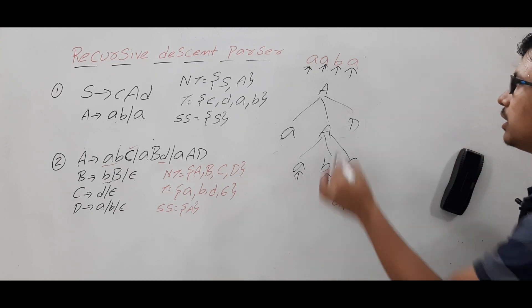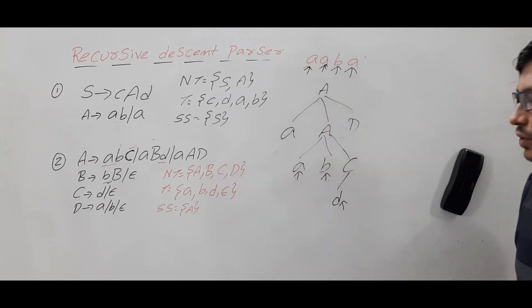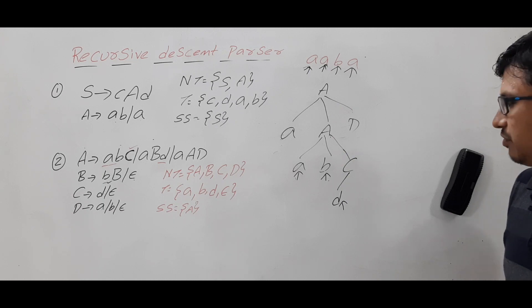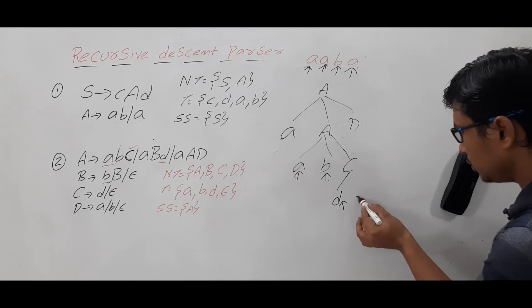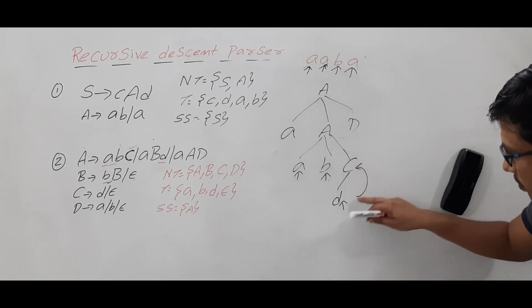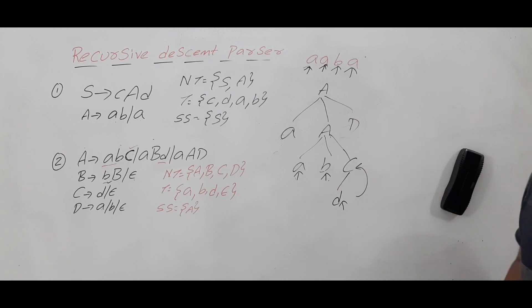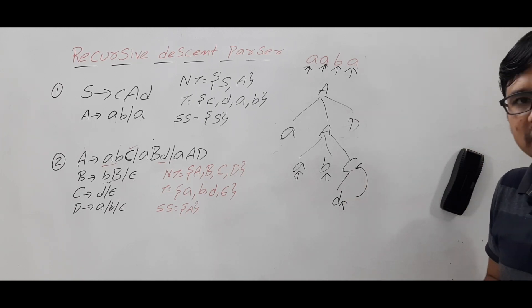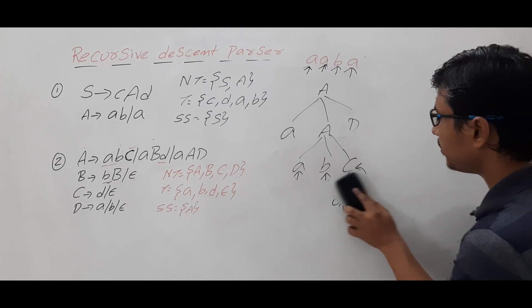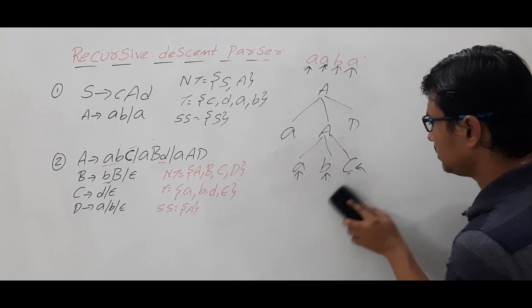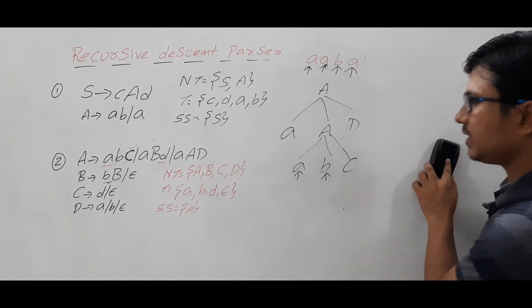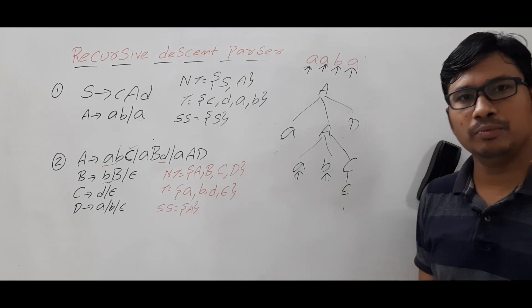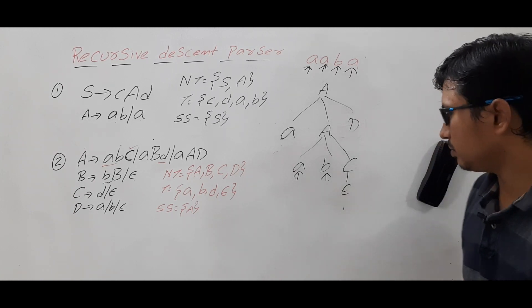For C, it uses the first production: C → d. The descent pointer points to 'd' and input pointer points to 'a' — there is a mismatch. So it does backtracking of C only, because the wrong decision was for C. It takes the next production for C, which is epsilon. Epsilon has string length zero, so nothing is matched.